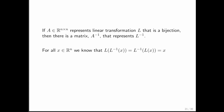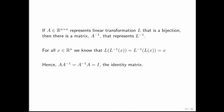What do we know? Well, we know that if we take any x in Rn, if we apply the inverse function first and then the function, we get x, or if we apply the function first and then the inverse function, we also get x. And therefore, it has to be the case that A times A inverse is the same as A inverse times A equals I.